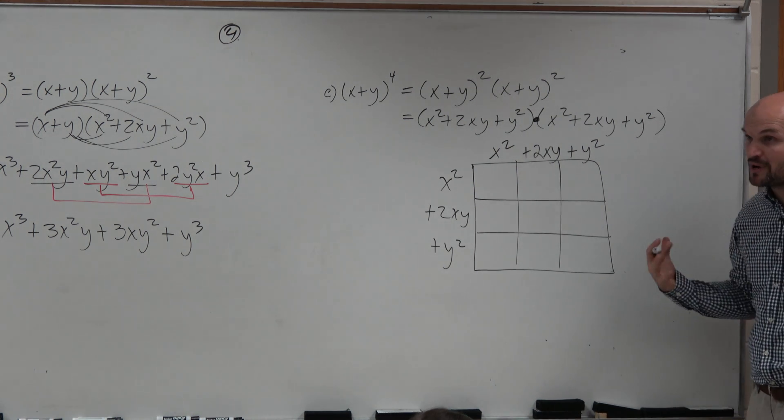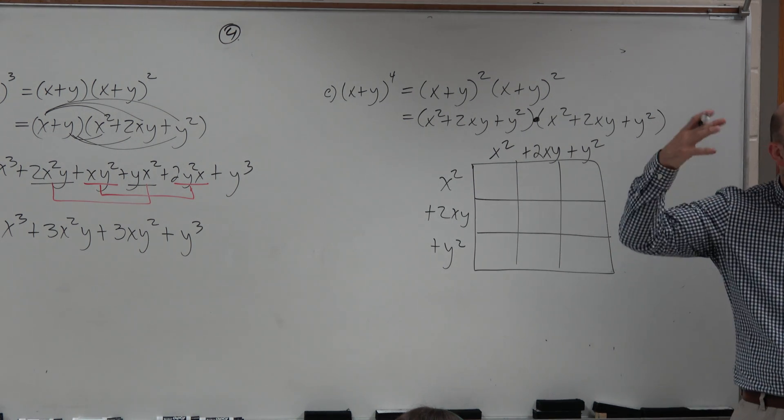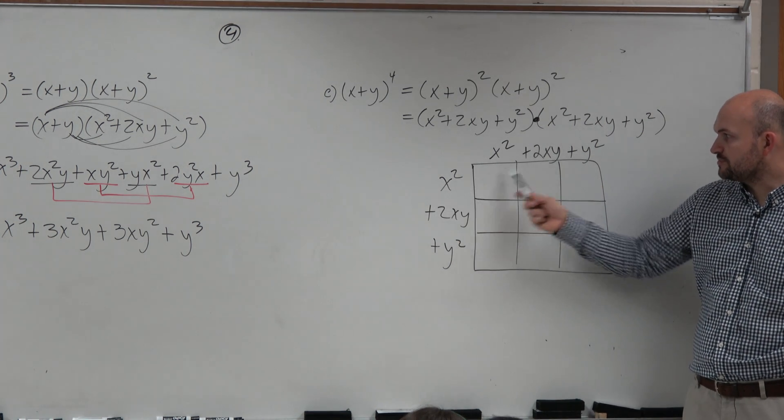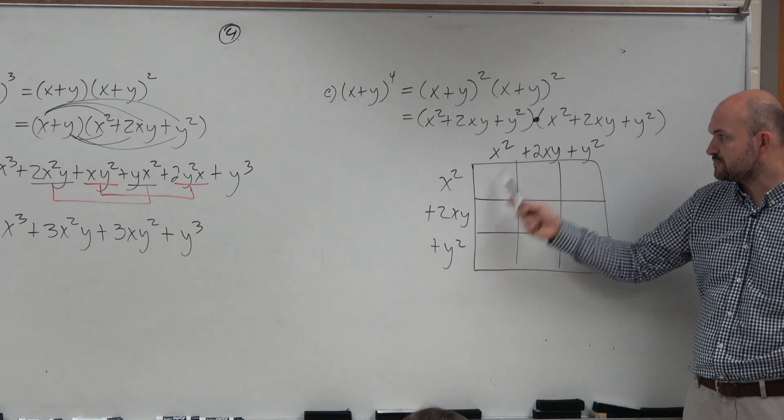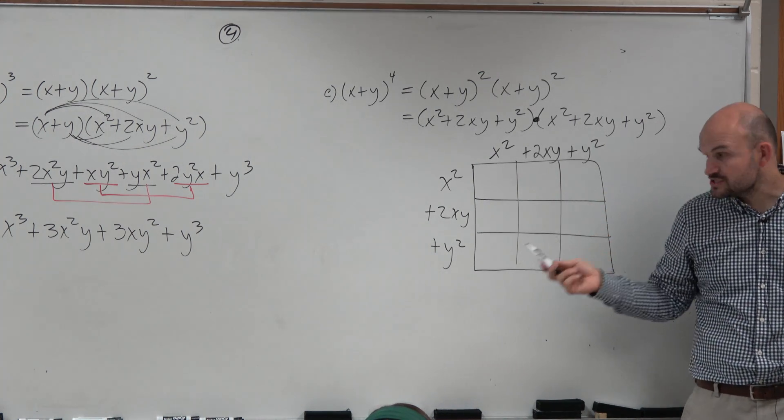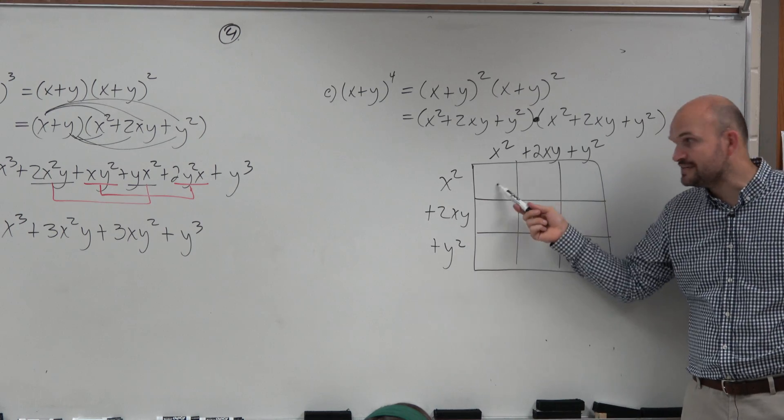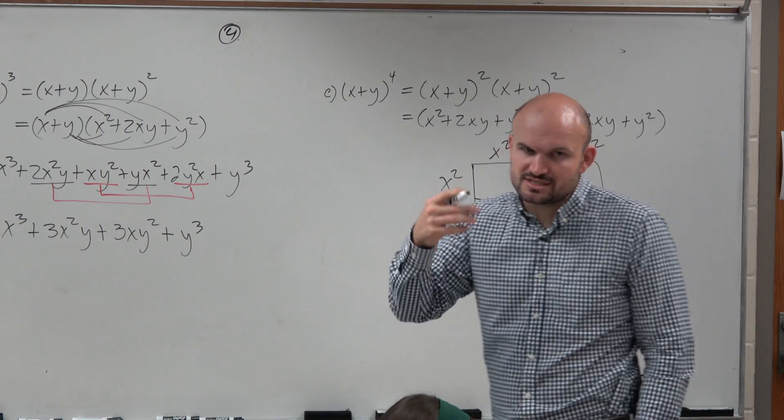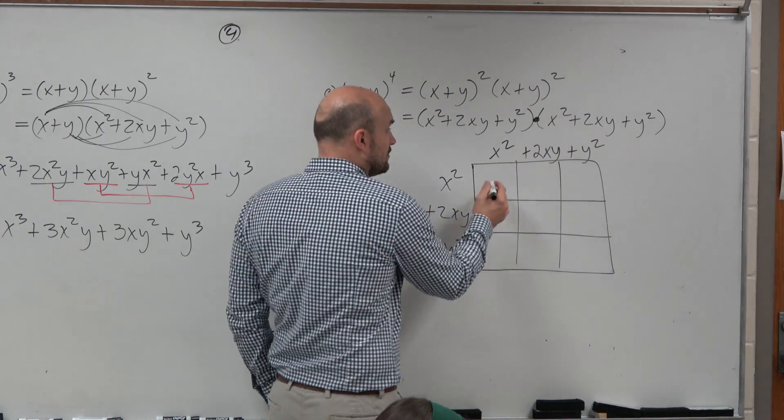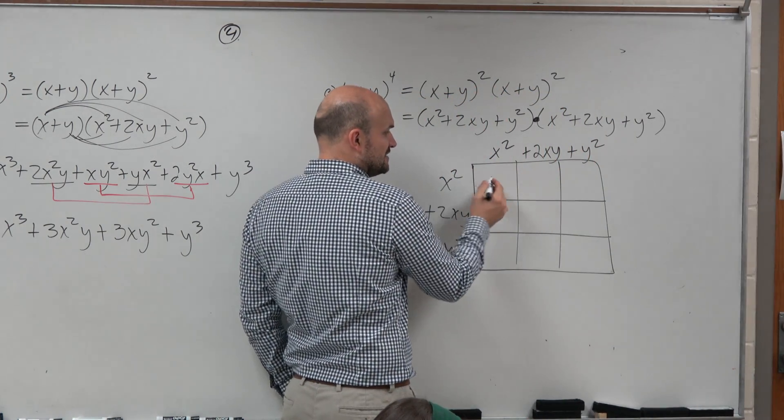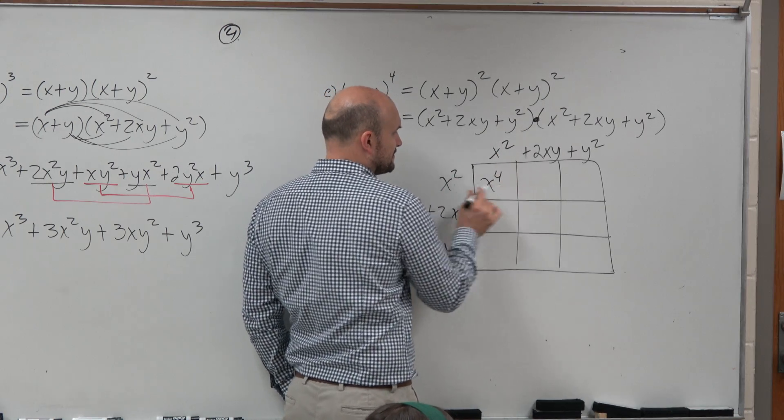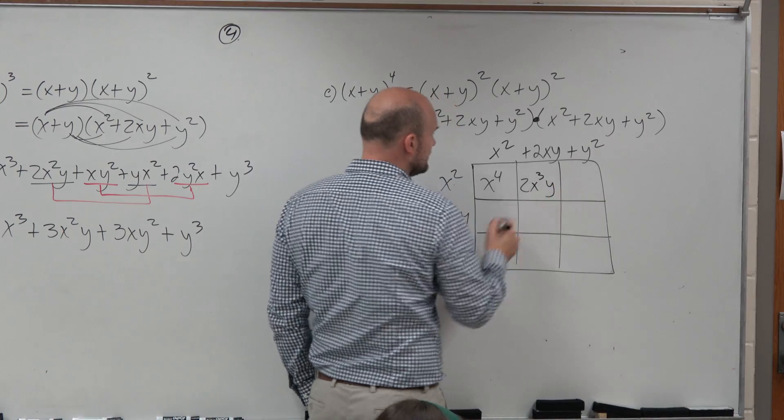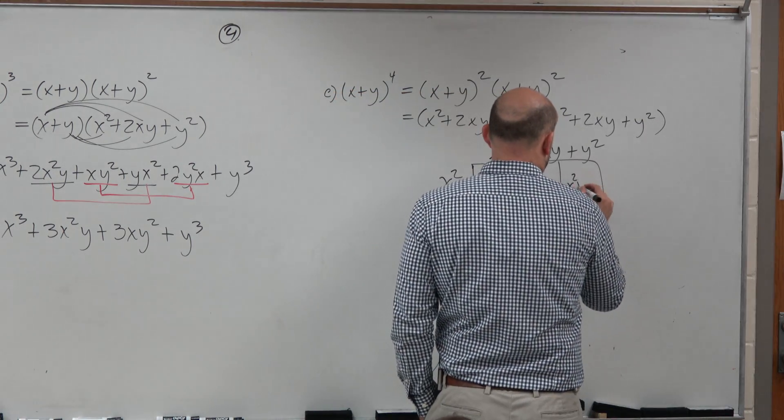Now, again, via distributive property, I have to multiply everything times everything. When you multiply these, does the x squared get multiplied by everything? Does the 2xy get multiplied by everything? Yeah, because all we're going to do now is just find the length and the width or the area of each box. So it's a little bit different. It's the same operation. We're just a little bit more organized. But don't worry, it gets a little better. So let's do the length and width of each box. x squared times x squared is x to the fourth. x squared times 2xy is going to be 2x cubed y. And x squared times y squared is x squared y squared.